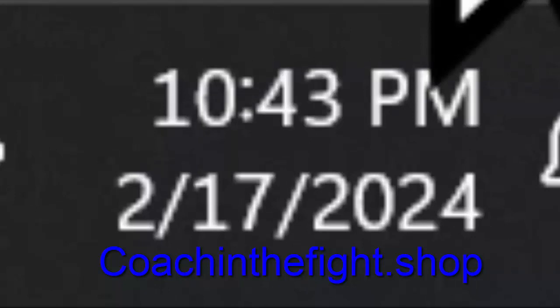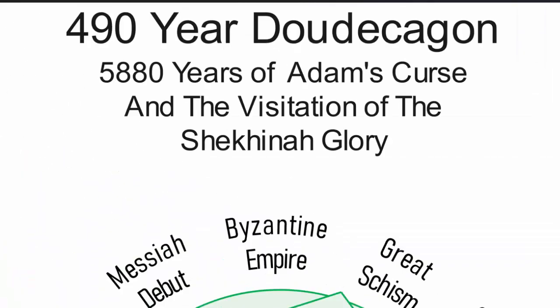Hey y'all, coaching the fight guys. Thanks again. In today's video, we're going to be talking about the 490 year dodecahedron. Is that how you pronounce it? Dodecahedron. It means a 12 sided figure, a 12 sided shape.